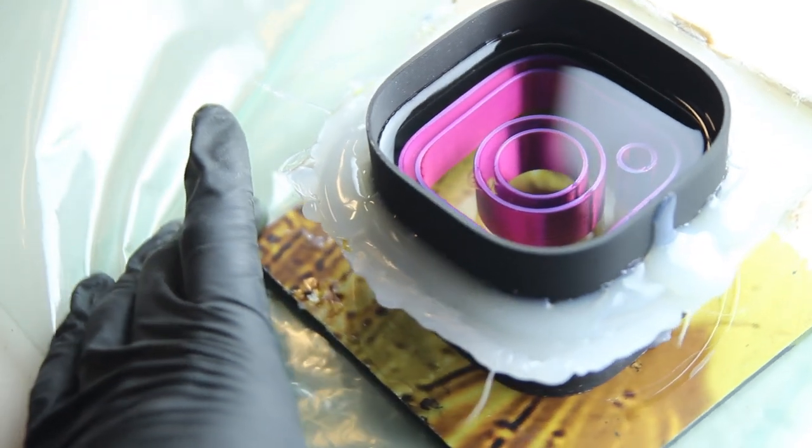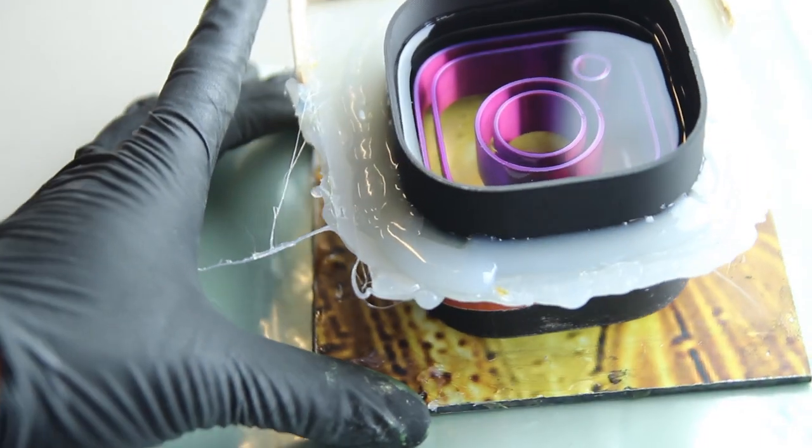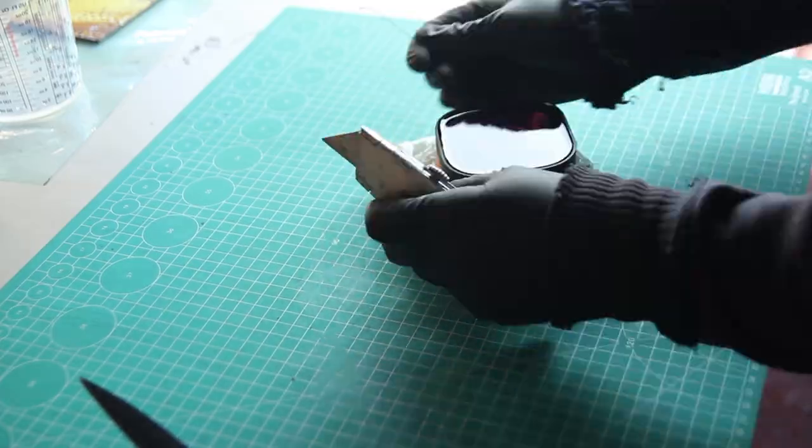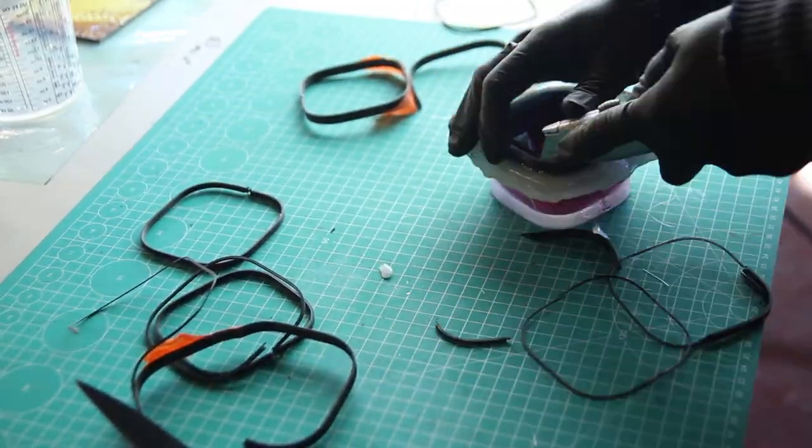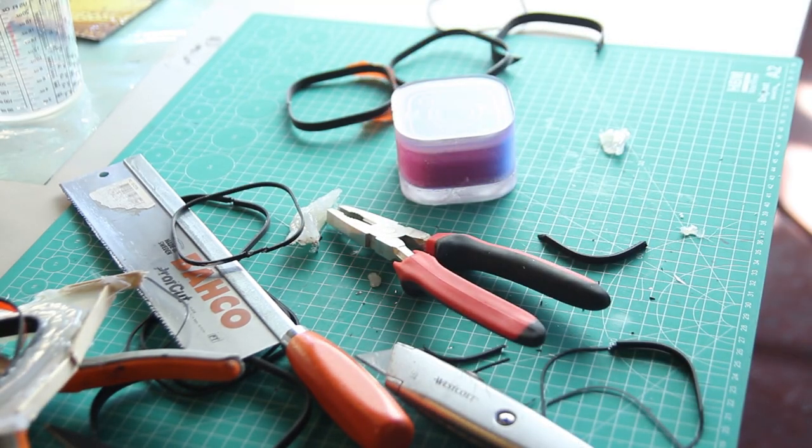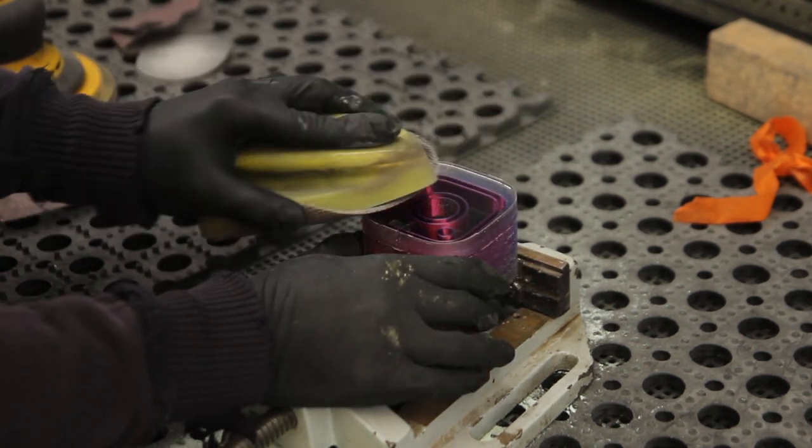Or you can use the degassing chamber again to remove the air that was stuck in these bubbles. Now it's just a waiting game - wait for the resin to fully cure, which took about two days again. Then you're able to demold the part.